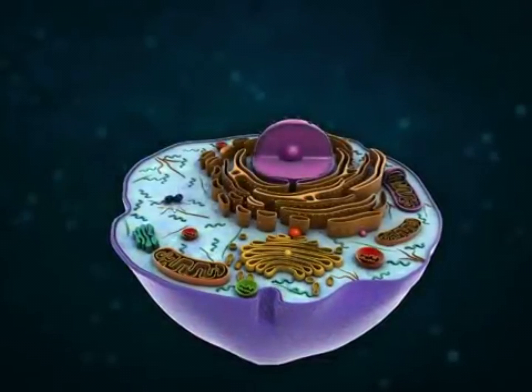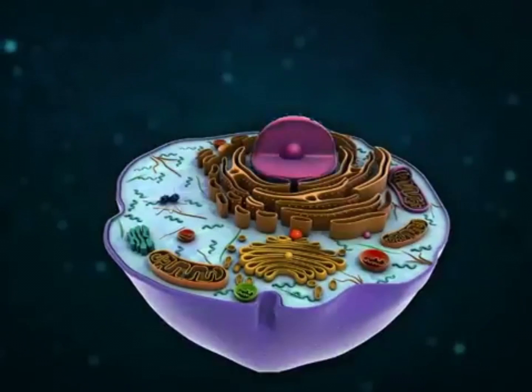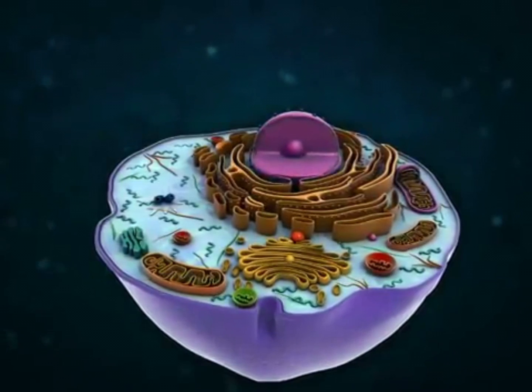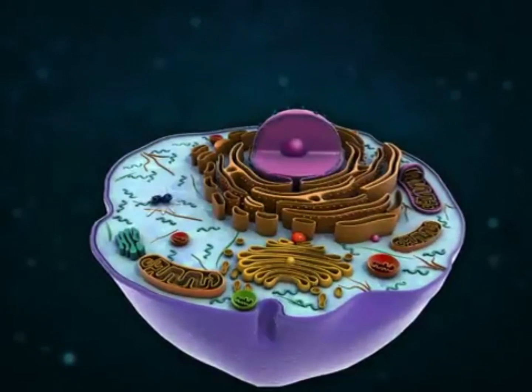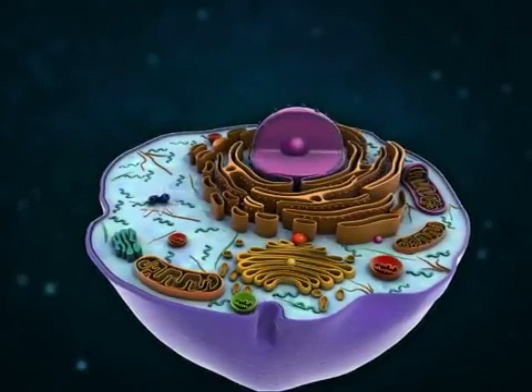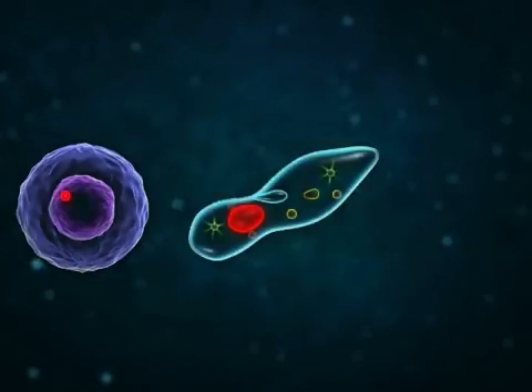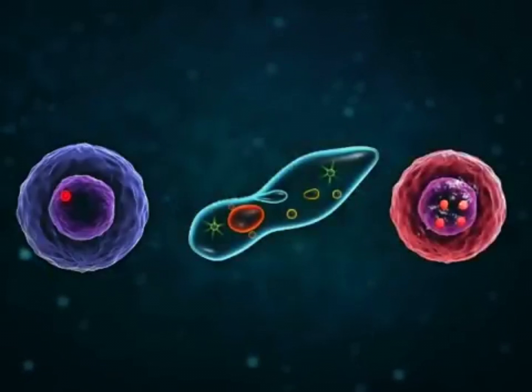Usually, cells contain a single nucleus, but the number of nuclei may vary from cell to cell. According to the number of nuclei, cells have been recognized as uninucleate cells, binucleate cells, and polynucleate cells.